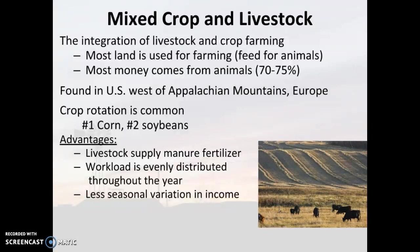It is really important that you use crop rotation in this type of farming because you don't have a whole lot of fields, so you're not going to allow any to fallow. Corn is the number one used crop in mixed crop and livestock, and the second most used and most important is soybeans.